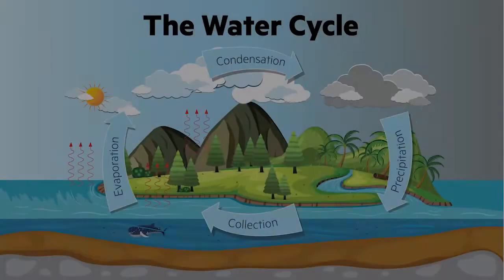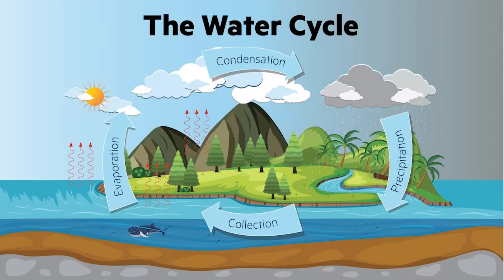The water cycle is the continuous process of water evaporating and condensing on planet Earth. This has been happening continuously for millions of years and without it there would be no life on Earth.